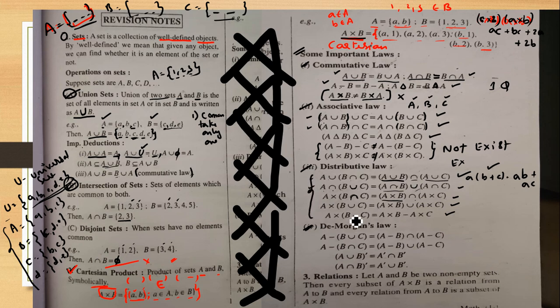So we have: distributive property, associative property, and commutative property. These are very, very important laws.